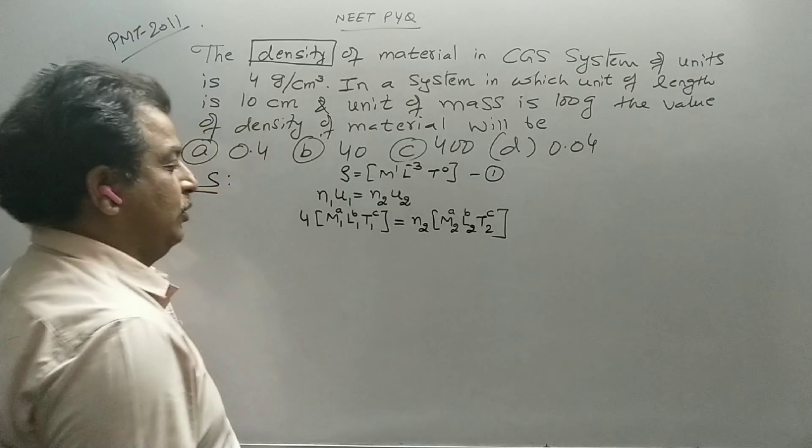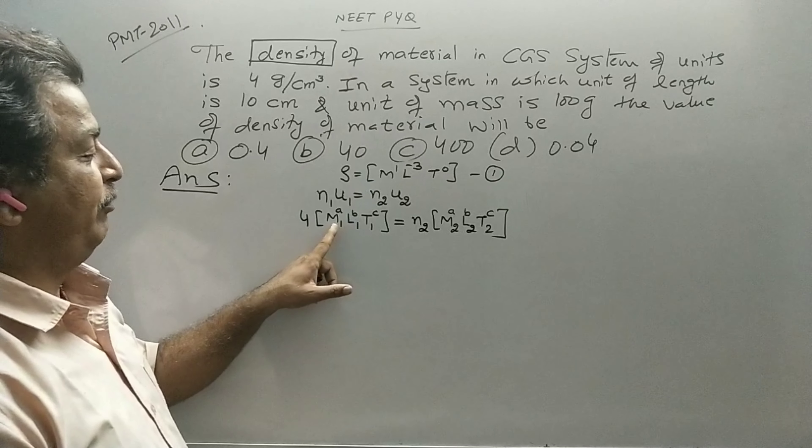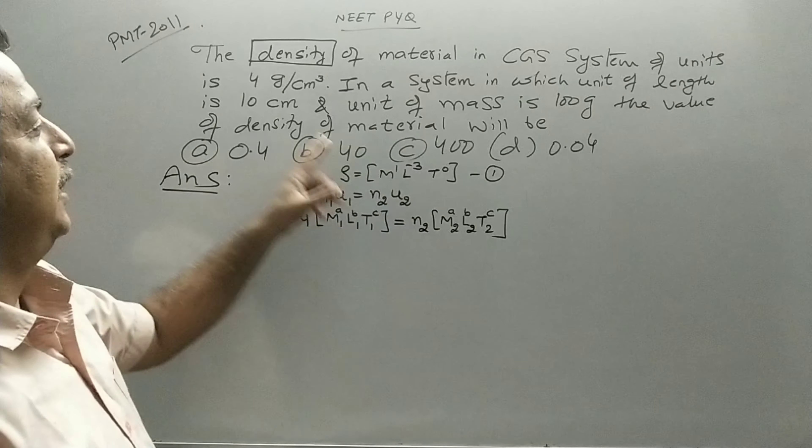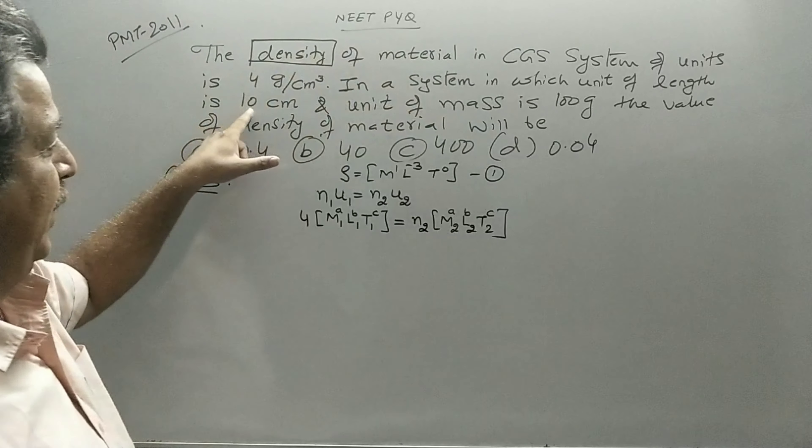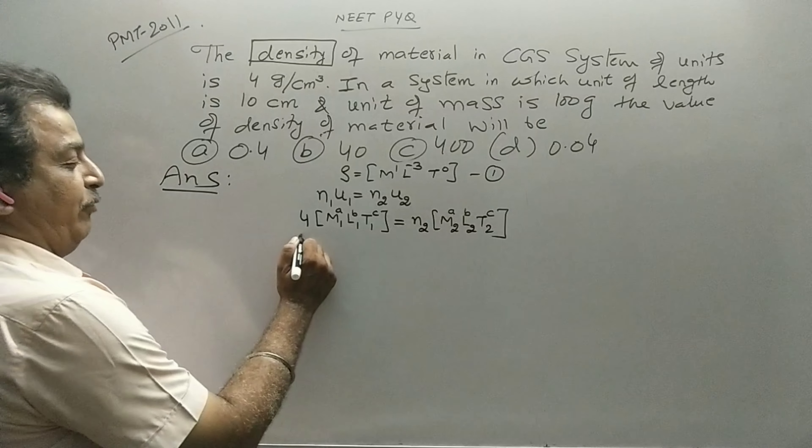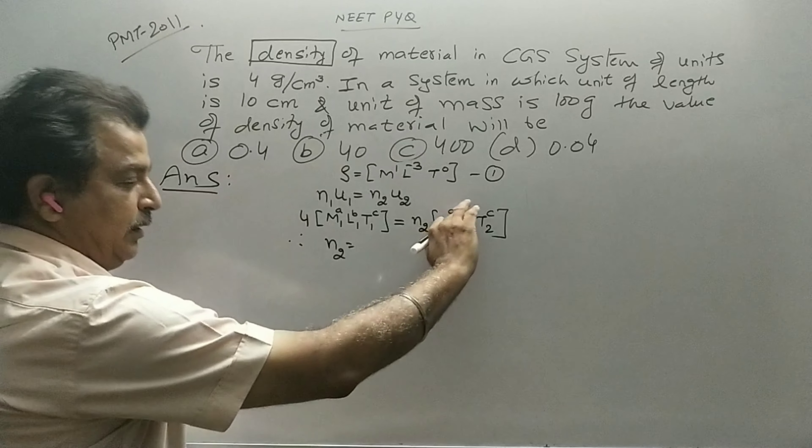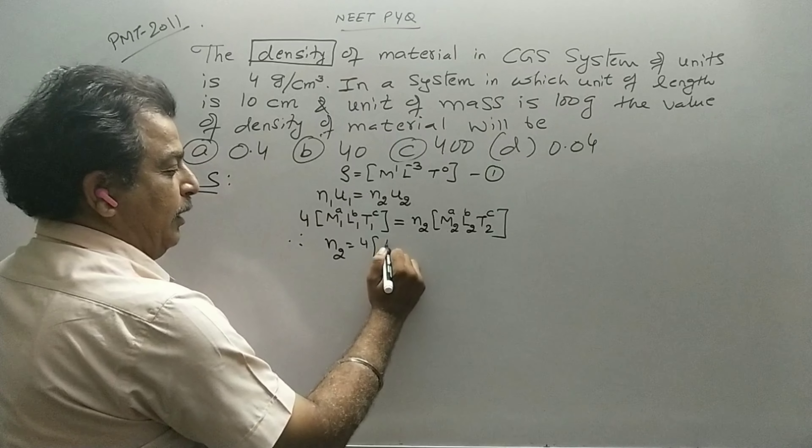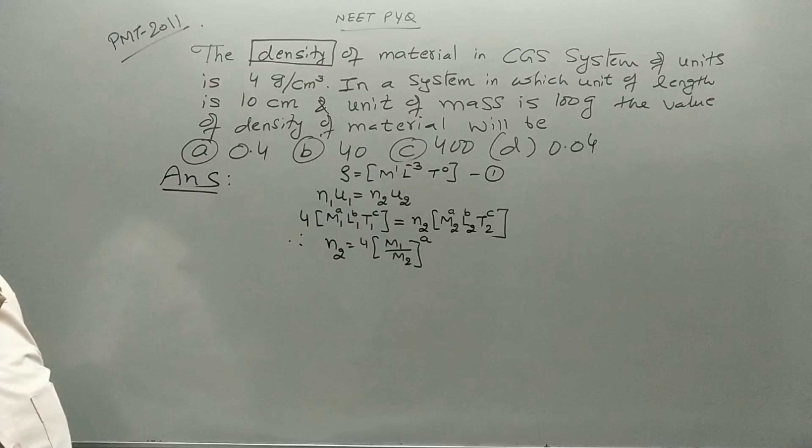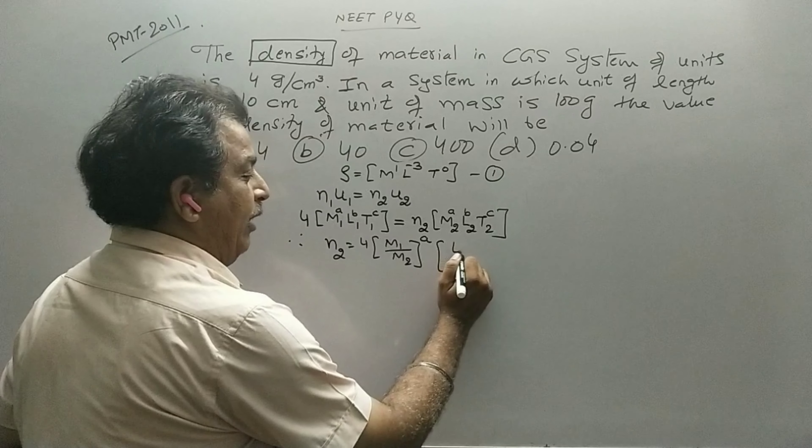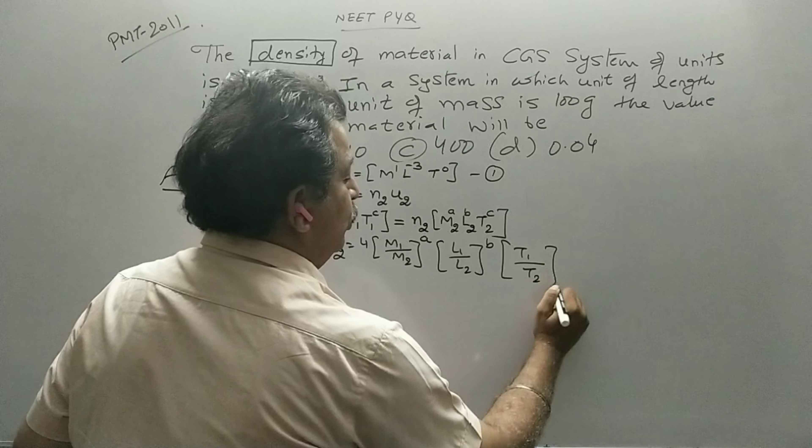The dimensional formula, dimension remains same, dimension A, B, C. The numerical values of mass, length, time may change. Like here mass 1 gram, 1 centimeter cube, but here mass 100 gram and length 10 centimeter. So therefore we write N2 is equal to denominator 4, M1 divided by M2, dimension A, then L1 over L2 power B, T1 over T2 power C.